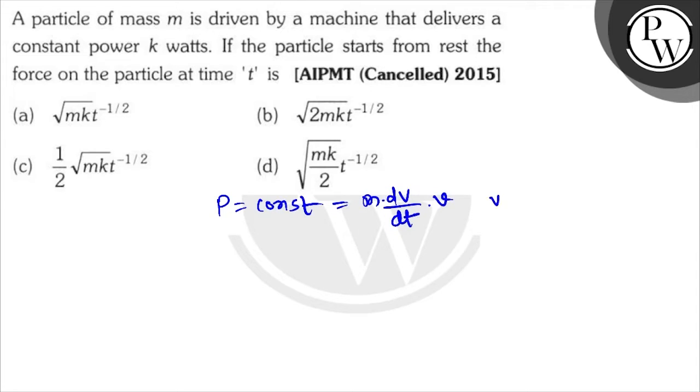Power, so v dv by dt is equal to P by m. So v dv is equal to P by m into dt. Doing the integration on both sides, we can get that v squared is equal to 2P by m into t.